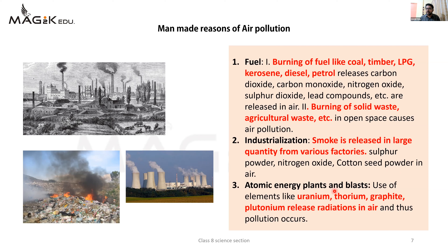The third is atomic energy plants and blasts. Hum atomic energy ka use electricity production mein bhi karte hain, aur uske saath atomic weapons - yani atom bombs banane mein bhi atomic energy role play karta hai. Jab bhi hum atomic energy se electricity ya atomic weapon bana rahe hote hain - uranium, thorium, graphite, plutonium - in ke use karne se air mein radiations release ho jaati hain. Radiations are nothing but electromagnetic waves jo humein cancer jaisi bimaariyaan cause karti hain - iski wajah se bhi air pollution hota hai.